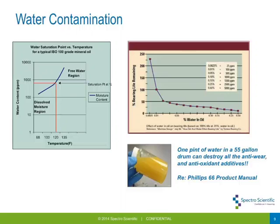Many bearing companies and equipment manufacturers all tell you to keep water out and under control. Even water getting into a brand new drum of oil can have serious side effects — water can react with and destroy additives before you have a chance to use the oil. Phillips 66 makes it quite clear in their product manual: keep the water out of the system because it will destroy the additives. So if you see a watery oil, you definitely want to do something about it before putting it into a system — preferably feed and bleed it.